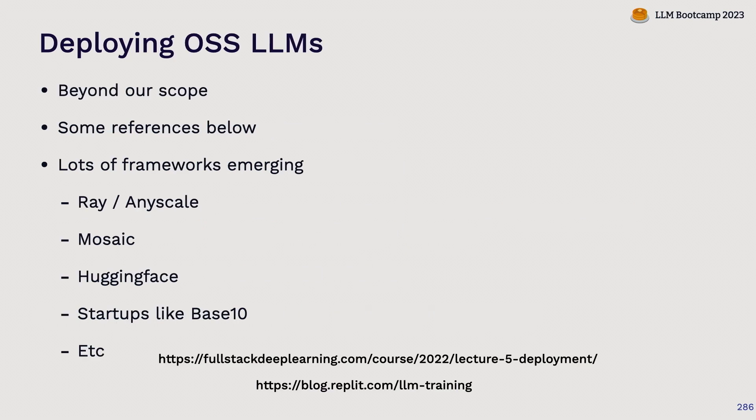Deploying open source LLMs is a whole other thing and worth learning about if you go down that path. There are tons of frameworks emerging that make different tradeoffs between ease of use, throughput, and latency. The two most credible are probably Ray/AnyScale and Mosaic — Ray is what we use at Gantry. Hugging Face and startups like Base10 are more oriented around ease of use rather than performance, but also good options. Check out the resources below and do your own research if you need to deploy open source LLMs.